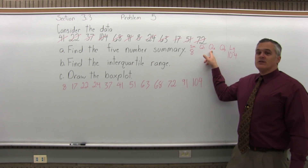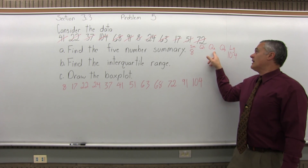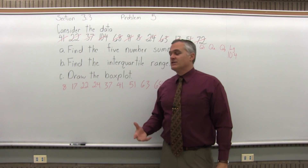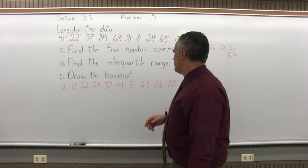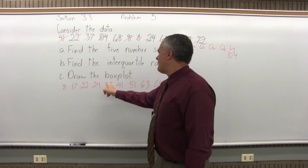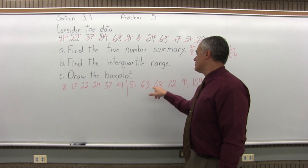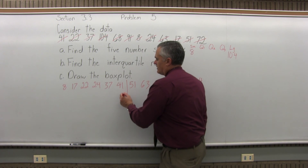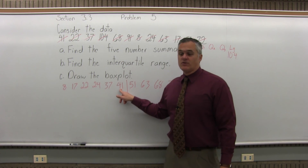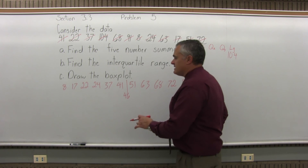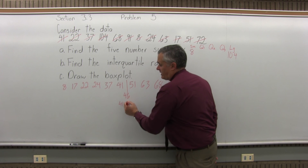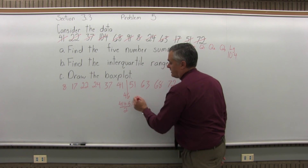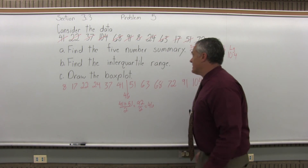For the quartiles, you must find the second quartile first — you can't start by finding Q1. Q2 is the median, or 50th percentile, of the list. I had 12 data values, and 12 is even, so the middle of this list occurs between two data values. Counting 6 from each side, the midway point falls between 41 and 51. 41 plus 51 is 92, divided by 2 is 46. So Q2, the median, is 46.